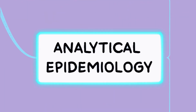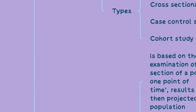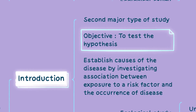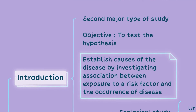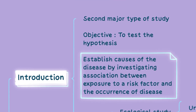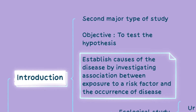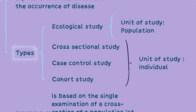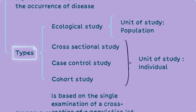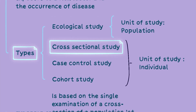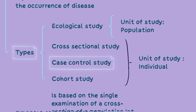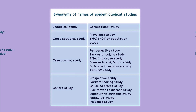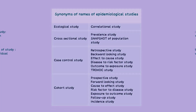Analytical epidemiology is the second major type of study, conducted to test hypotheses and establish the cause of a disease by investigating the association between exposure to a risk factor and occurrence of the disease. Various types of studies fall under analytical epidemiology, including ecological studies, cross-sectional studies, case-control studies, and cohort studies. Synonyms of names of epidemiological studies are as seen in the table on our mind map.